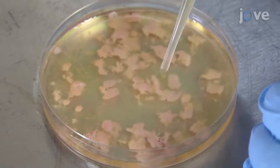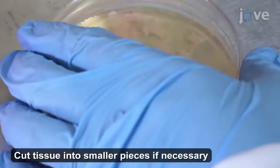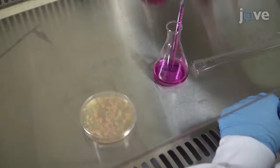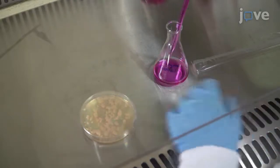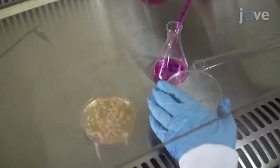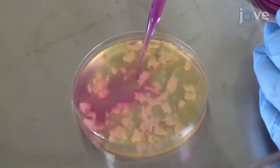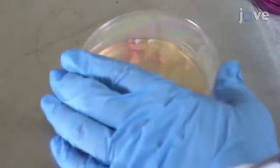After this, use a sterile Pasteur pipette to repeatedly aspirate the mixture to encourage disintegration of the tissue. Add another five milliliters of 1x collagenase D solution to the tissue and incubate it at 37 degrees Celsius with periodic gentle agitation for another 30 minutes.